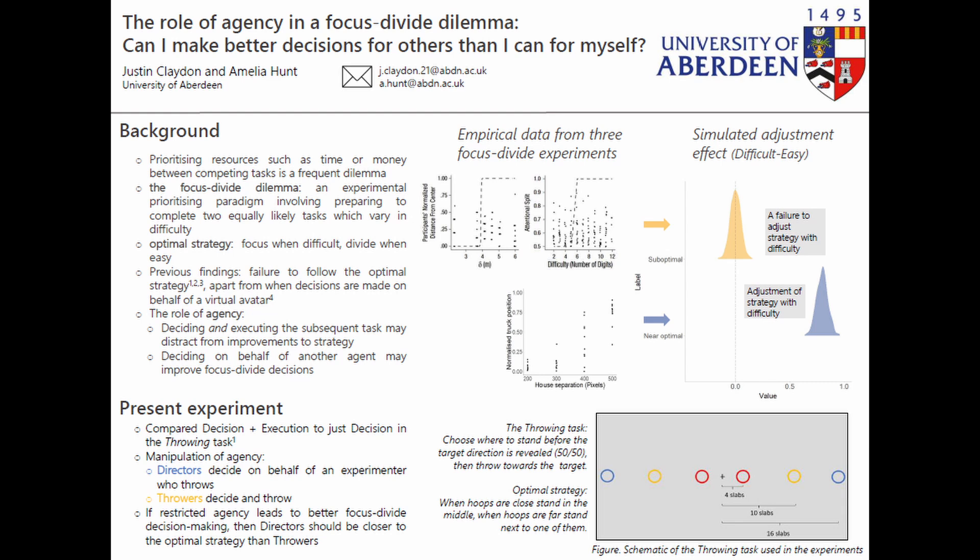The optimal strategy is to stand in the middle when the hoops are close together, and stand adjacent to one of them when they're far apart. We compared the decisions of throwers, who decided where to stand and also made the throw, to the decisions of directors, who only decided where to stand and then an experimenter made the throw on their behalf.